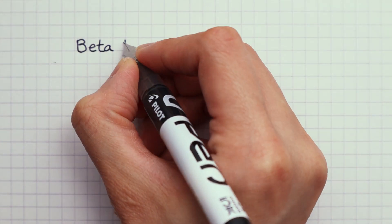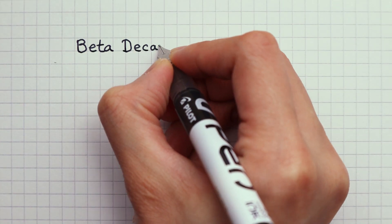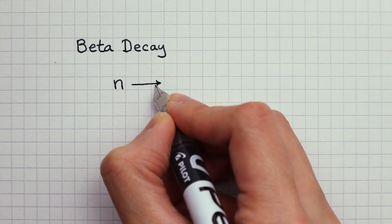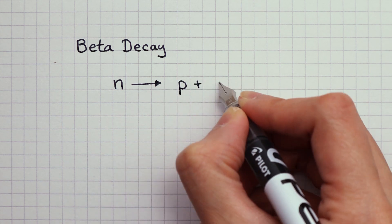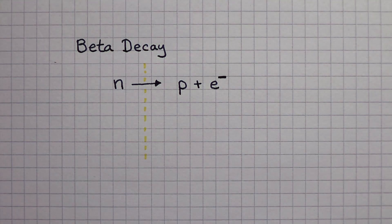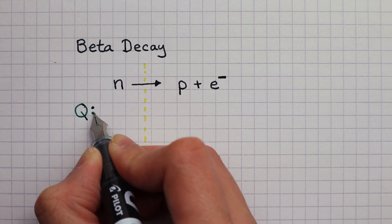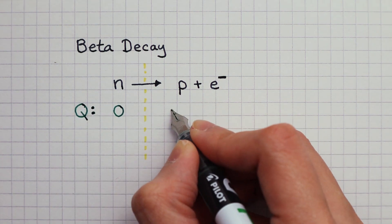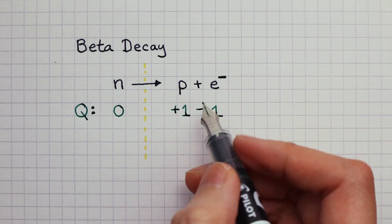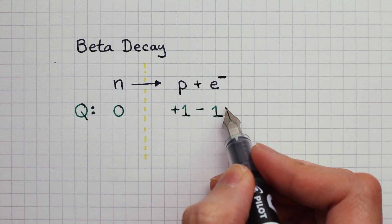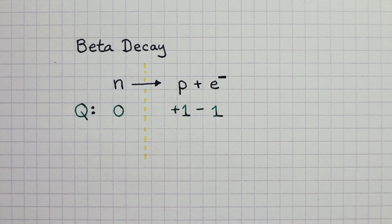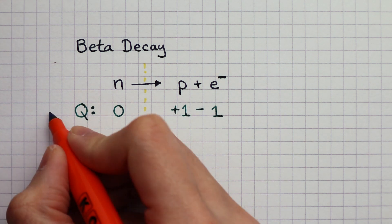Let's see how we can apply this to beta decay, where a neutron changes into a proton and an electron. We'll check if charge is conserved. A neutron is neutral. Proton, plus one. Electron, minus one. So the right-hand side balances to the left-hand side. This means that charge is conserved.